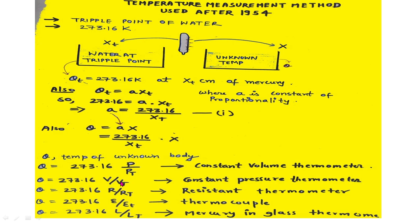Similarly, in a constant resistance thermometer, resistance is the thermometric property, and temperature is given by theta equals 273.16 times (r / r_t), where r is the resistance at the unknown temperature and r_t is the resistance at the triple point. In a thermocouple, EMF or voltage is the thermometric property, so theta equals 273.16 times (e / e_t), where e is the EMF at the unknown temperature and e_t is the EMF at the triple point of water.